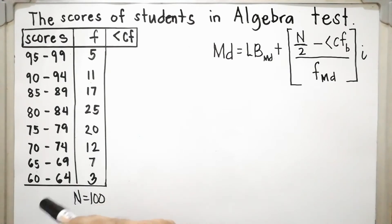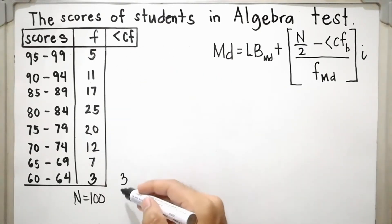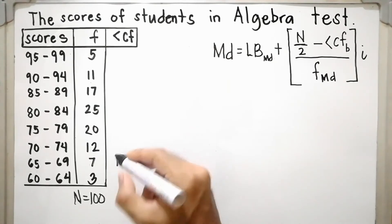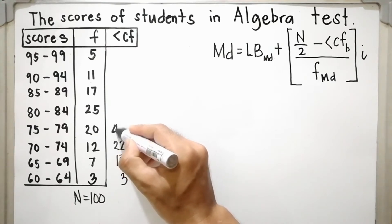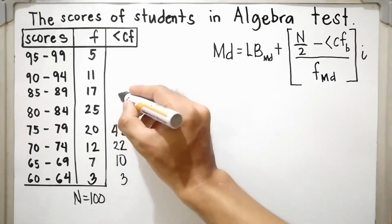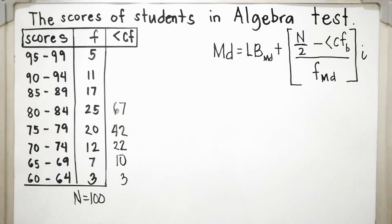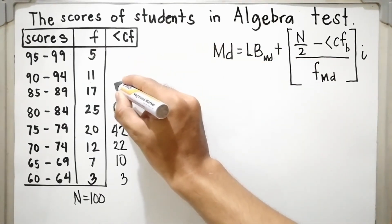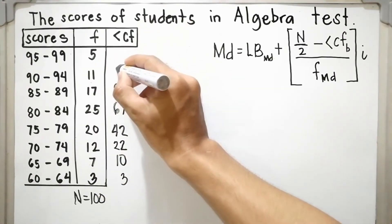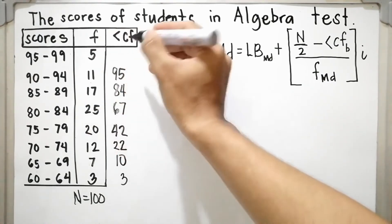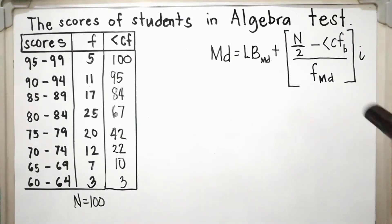The less-than cumulative frequency starts at the lowest class interval, which is 60–64, so copy its frequency: 3. Then add upward: 3 plus 7 is 10; 10 plus 12 is 22; 22 plus 20 is 42; 42 plus 25 is 67; 67 plus 17 is 84; 84 plus 11 is 95; and 95 plus 5 is 100. The last value of the less-than cumulative frequency must equal N.